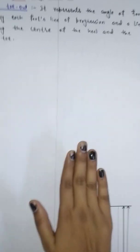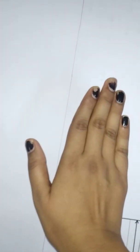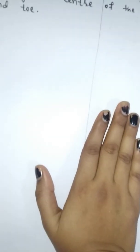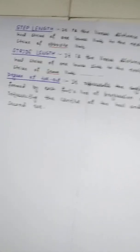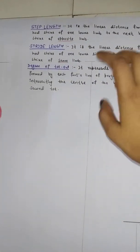When you walk, you place your foot in a pattern — how much degree of toe out is present depends on your gait. Whether it is in-toe or out-toe is a completely different topic. So this covers step length, stride length, and degree of toe out as part of this project work.